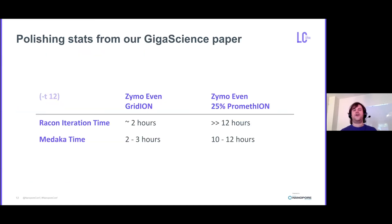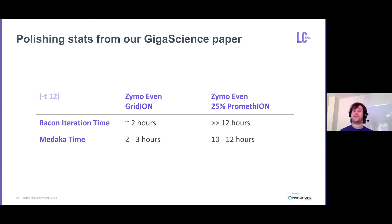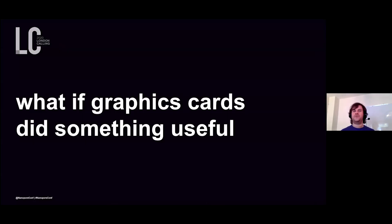We were wondering — this is a lot of polishing — how much time did we actually spend polishing for the data in our GigaScience paper from last year? On the Gridion, a Racon iteration was about two hours, and for the Zymo even community on the PromethION subsampled to 25%, we were spending more than 12 hours on each Racon iteration. This builds up. Can we do better?